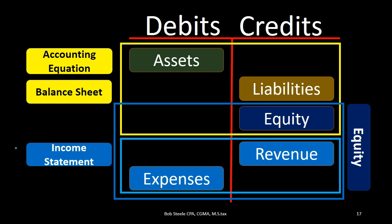Next time we'll talk about ideas to help with recording actual journal entries with the debits and credits involved in a transaction. But if we want to make an account go up or down, this one rule is all we need to know, along with the cheat sheet and the normal balances of each account type.